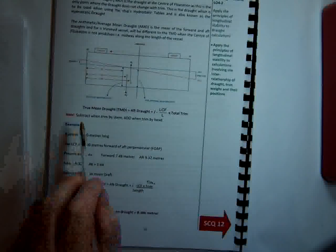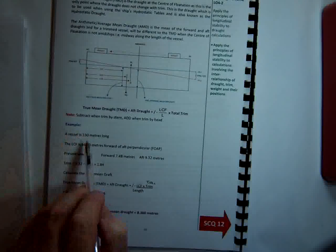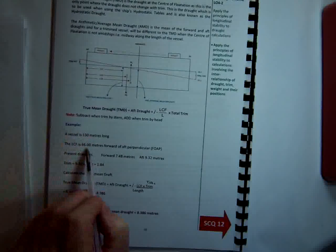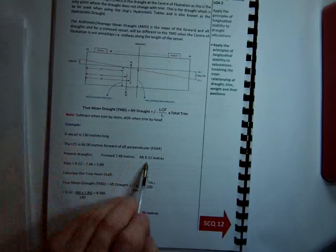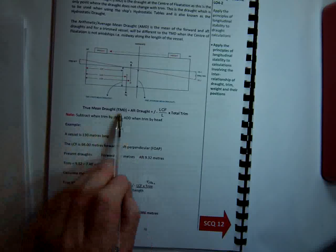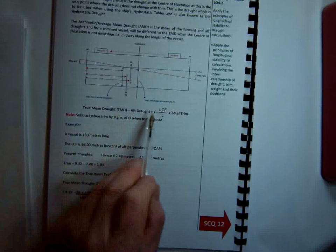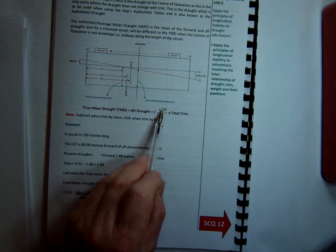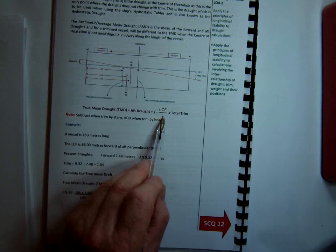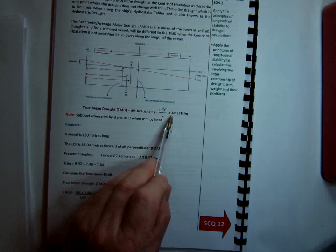And we'll have a look at a problem here. It gives us the length of the vessel and it actually gives us the LCF. And it gives us our drafts forward and aft. Now the formula for true mean draft, it's the aft draft plus or minus LCF over length between perpendiculars times the total trim.